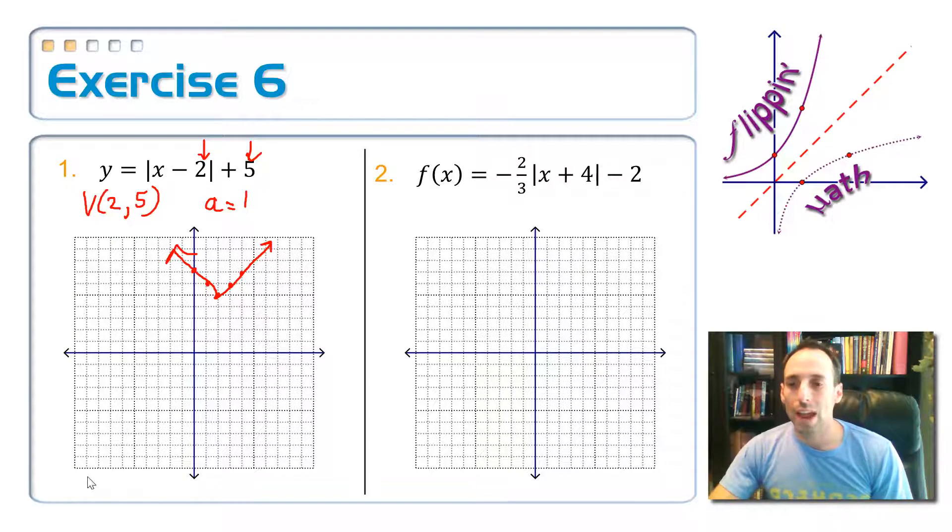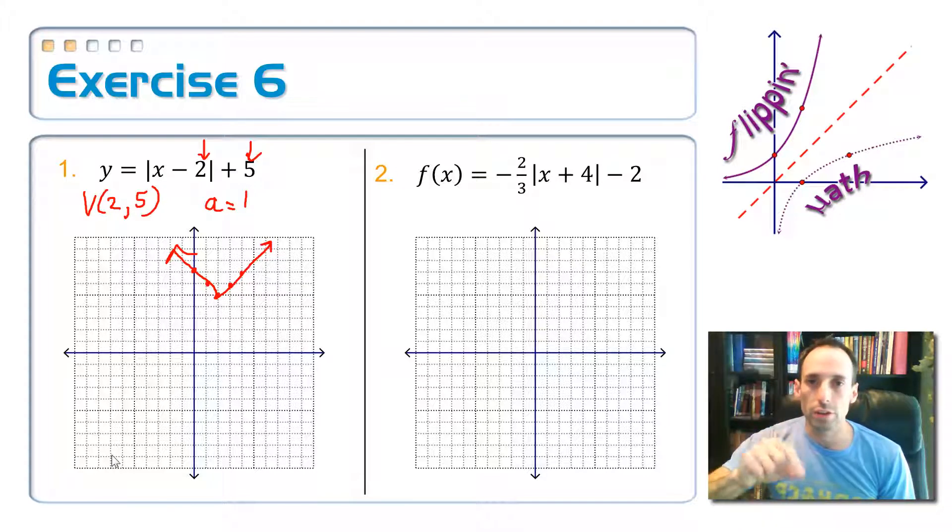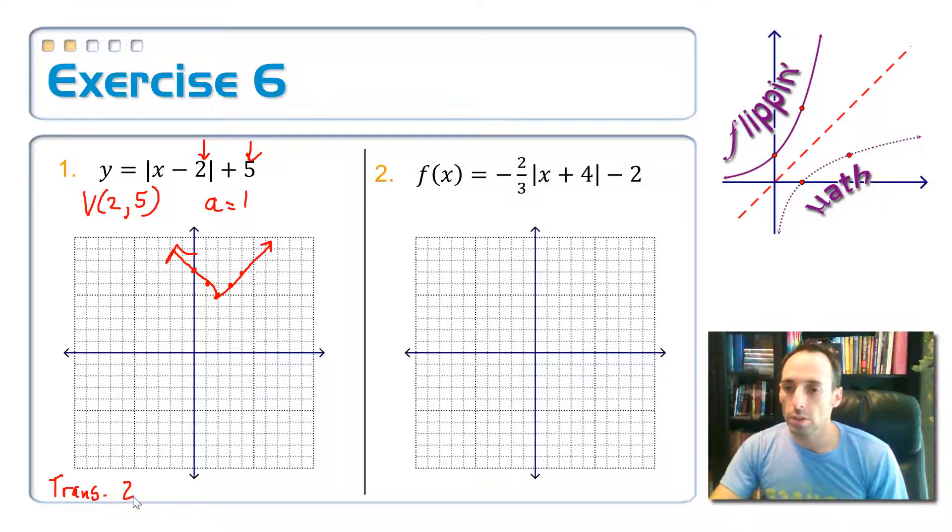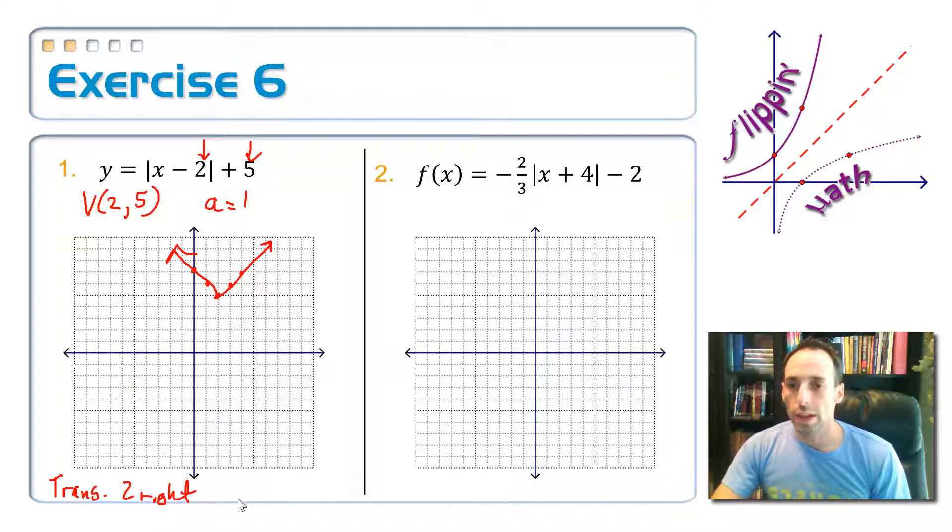So the second part of this is, how does this compare to the parent function? Well, it's not stretched any. It doesn't get fatter or skinnier. It's not reflected. The only thing that happens is that this is translated 2 to the right, 2 to the right. Remember, because it lies. And then up 5. Up 5.